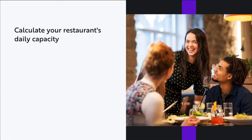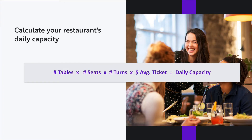The first technique: calculate your restaurant's daily capacity. One of the simplest approaches to forecasting is to estimate your restaurant's capacity — that is, if you have a great night of business in which all your tables are used to the max, how much money would you make? You can answer that with the following formula: number of tables × number of seats × number of turns × average ticket price.